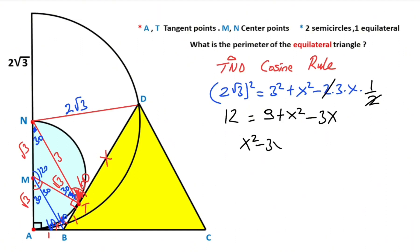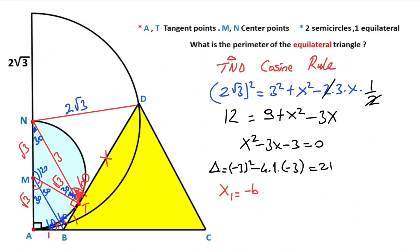Therefore x² minus 3x minus 3 equals 0. We get a quadratic equation. Calculating the discriminant: delta equals (-3)² minus 4 times 1 times (-3), which equals 9 plus 12 equals 21. The first root equals (3 minus √21) over 2.